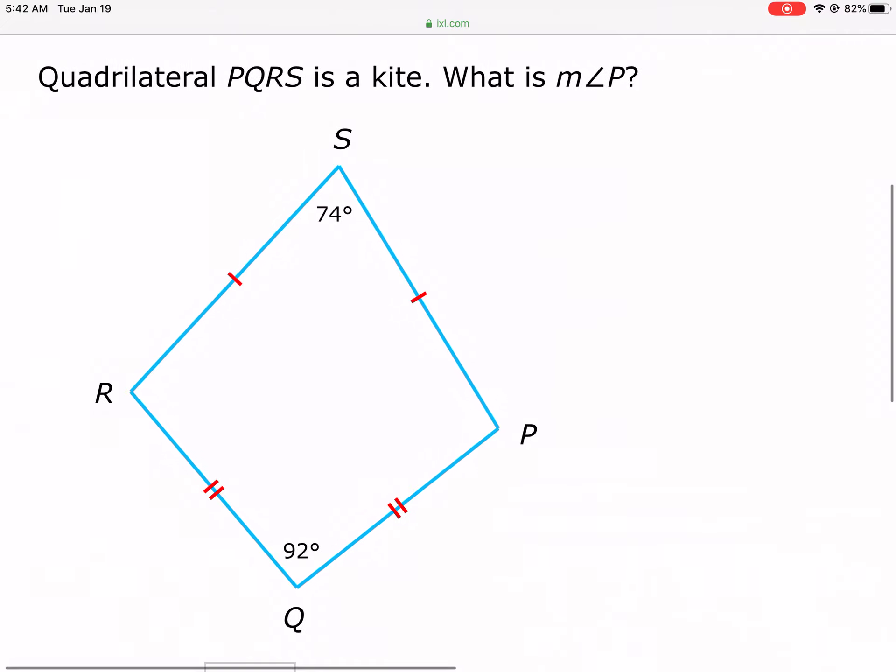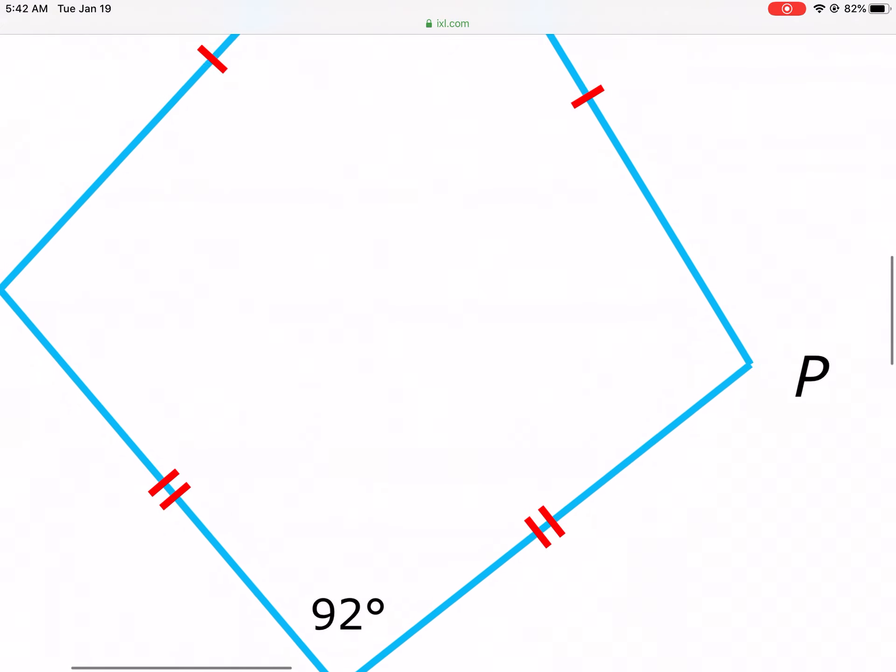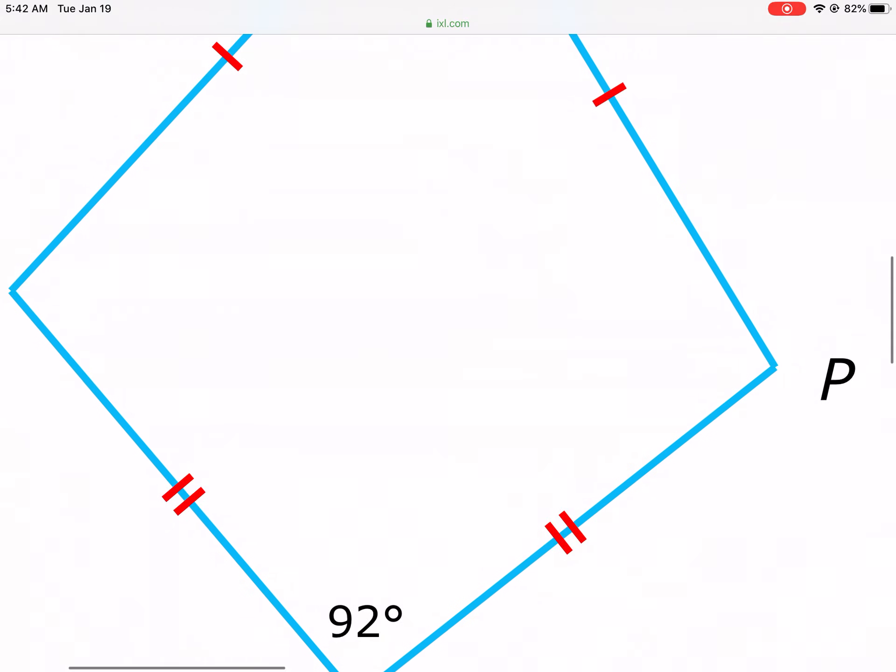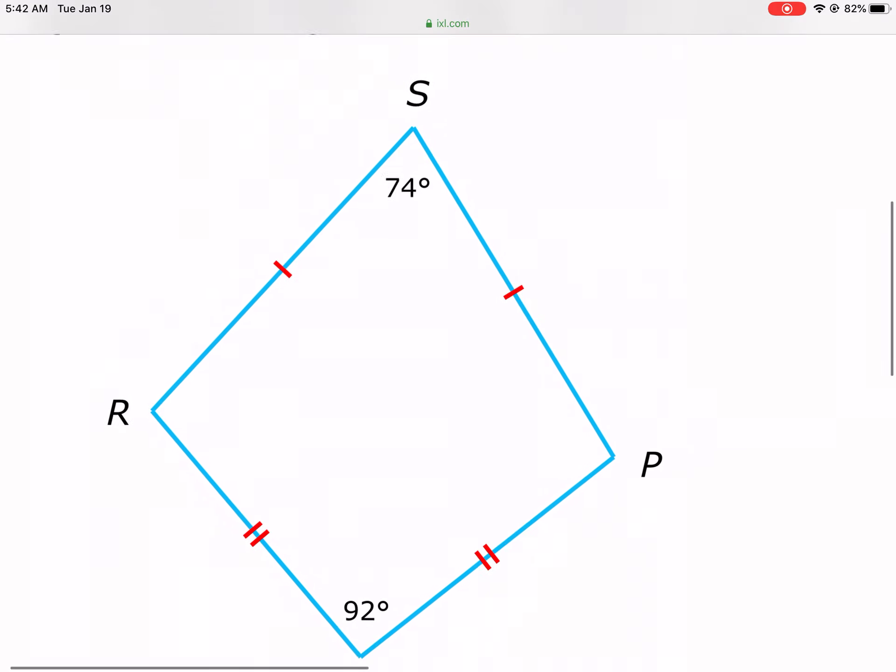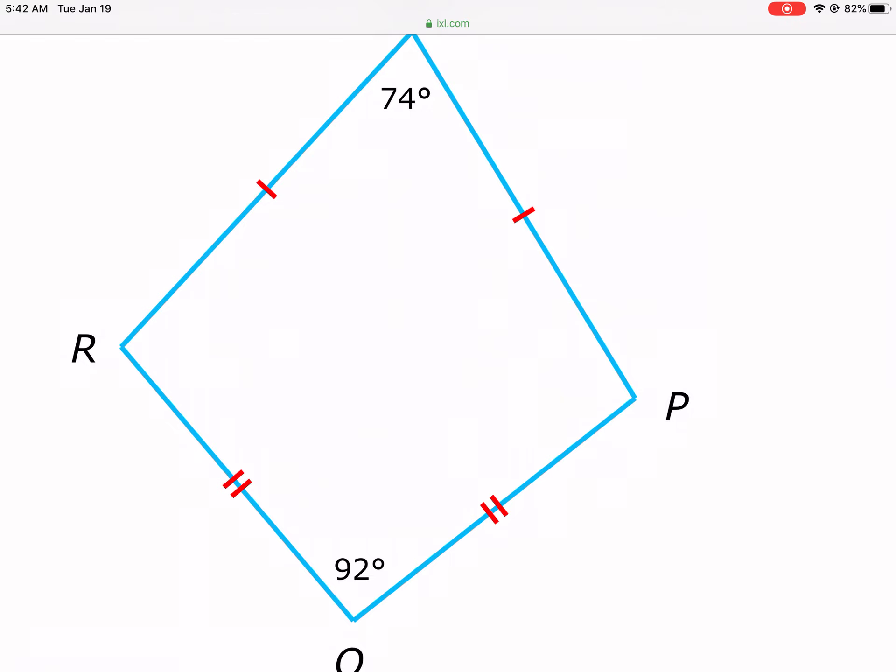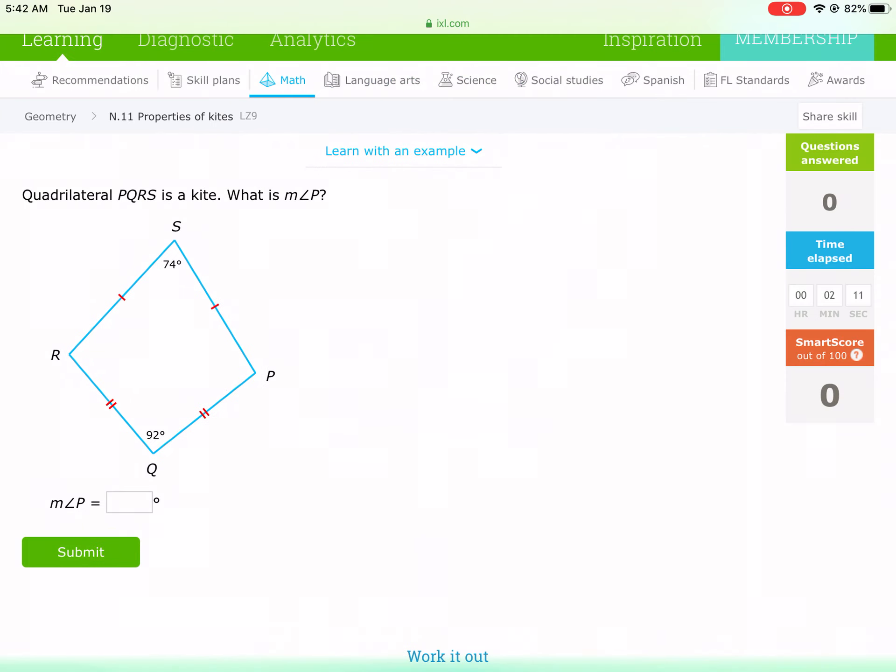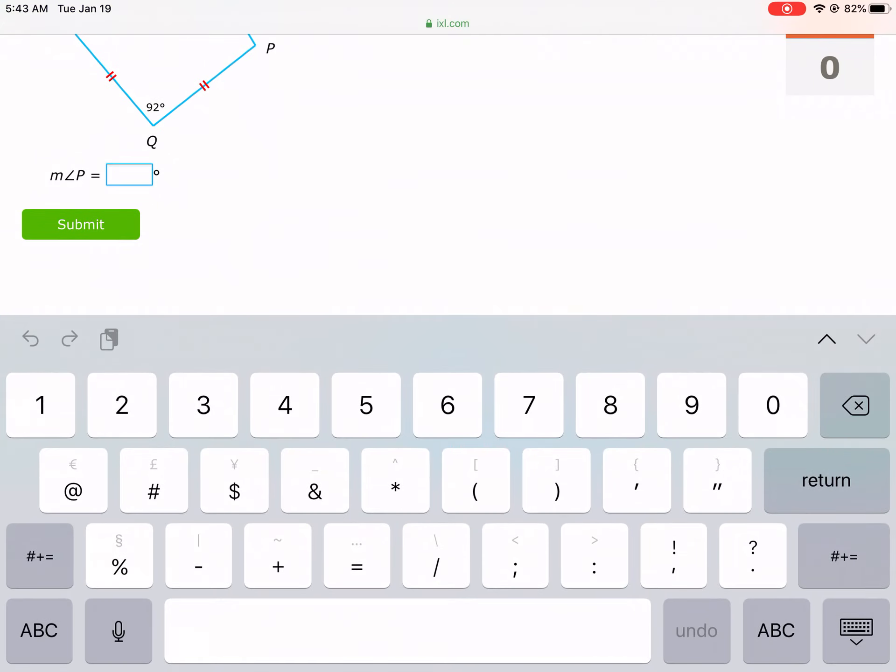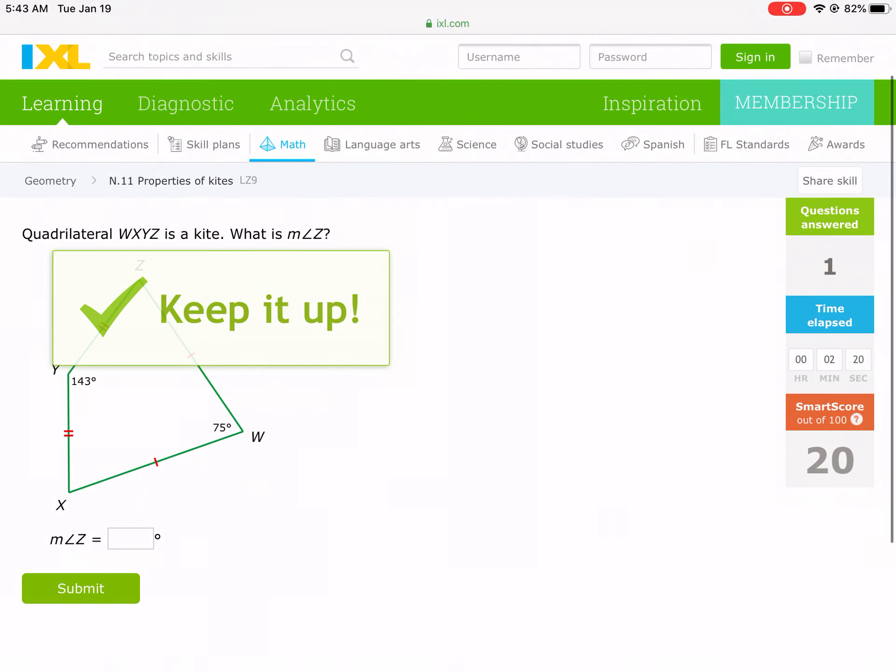So 194 is split evenly between angle R and angle P, because those two are congruent. R and P are congruent. So if they're the same and there's 360 degrees in a complete quadrilateral, any quadrilateral has 360 degrees, we just simply need to divide 194 divided by two to find angle R and P. After I divide it by two, I get 97 for that.